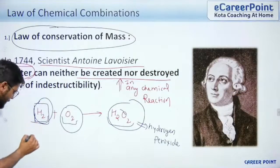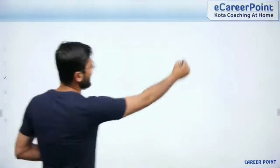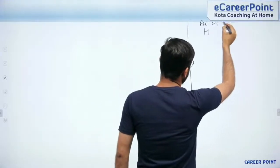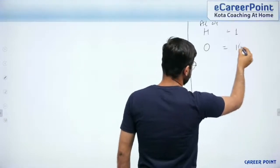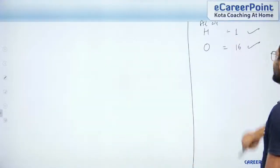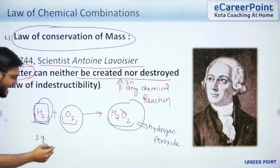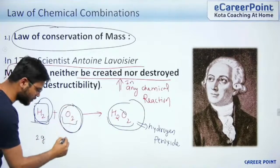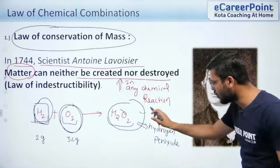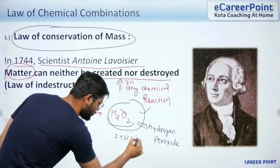Let me write the atomic or molecular weight of these molecules. For hydrogen, the atomic weight is 1, so H2 is 2 grams. Atomic weight of oxygen is 16, so O2 is 32 grams. For H2O2, which is hydrogen peroxide, we do 2 plus 32 which equals 34.